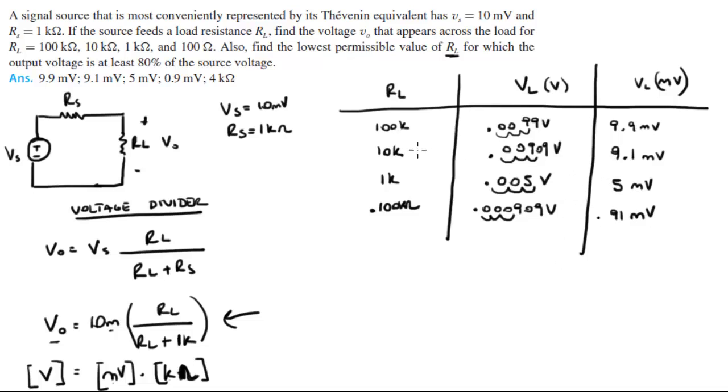So as you can see, the lower the resistance, the lower the voltage drop across RL, which means the lower the output voltage of the source. And as you can see the answers are consistent with the answers given in the book. Now they want you to find the lowest permissible value for RL so that the output voltage is at least 80% of the source voltage.